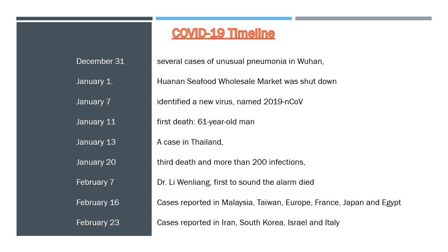As health experts worked to identify the virus amid growing alarm, the number of infections exceeded 40. On January 7, officials announced they had identified a new virus, according to the WHO. The novel virus was named 2019-nCoV and was identified as belonging to the coronavirus family, which includes SARS and the common cold. On January 11, China announced its first death from the virus, a 61-year-old man who had purchased goods from the seafood market. The WHO reported on January 13 a case in Thailand, the first outside of China, in a woman who had arrived from Wuhan.